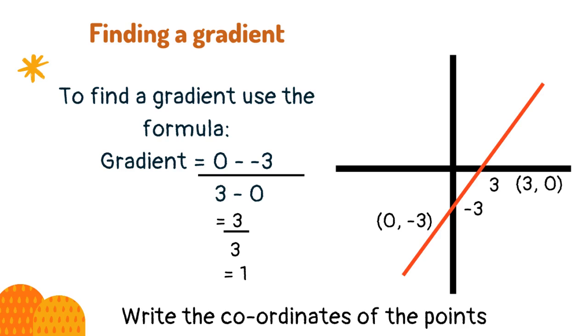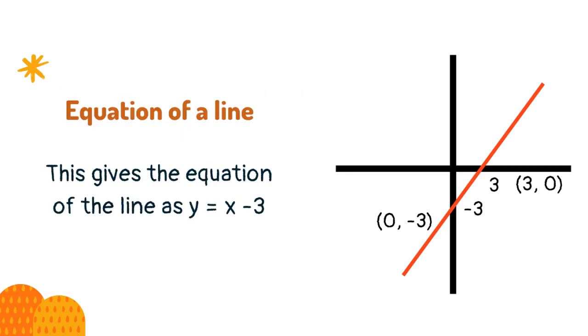3 divided by 3 gives 1. So the line has a gradient of 1. This gives the equation of the line as y equals x minus 3.